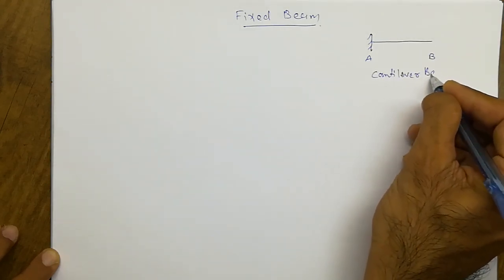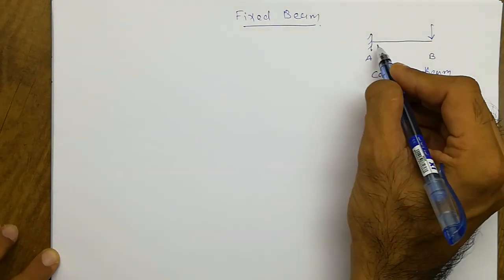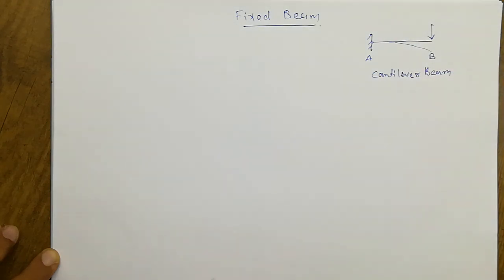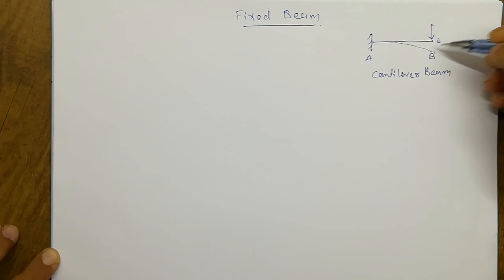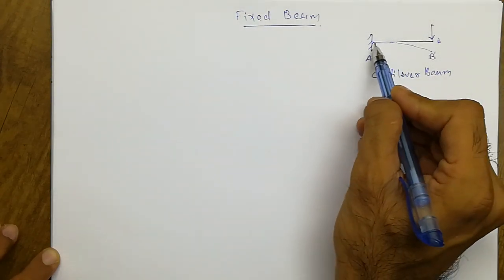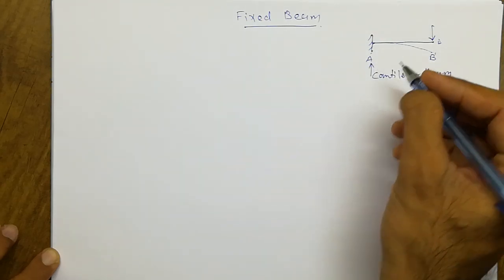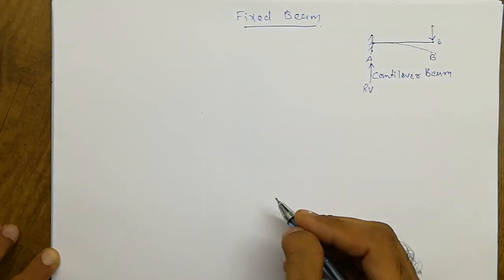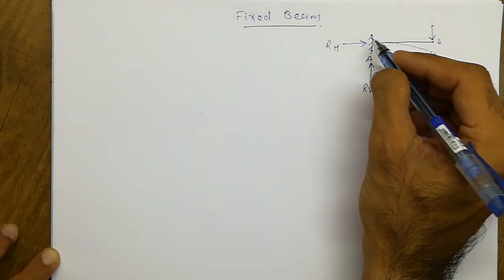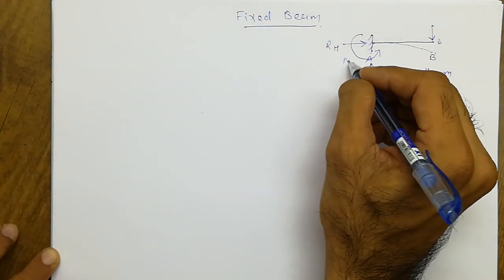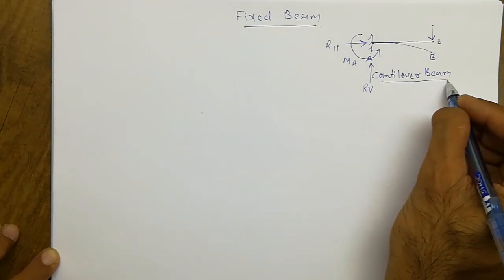a cantilever beam. When I apply a point load at the free end, due to that loading there will be a deformation of the beam. Suppose this point is deflected to B dash. But look at support A — there is no change in position because this is a fixed support. The basic characteristic of a fixed support is that it has the ability to resist the vertical reaction, horizontal reaction, and also the moment resistance.